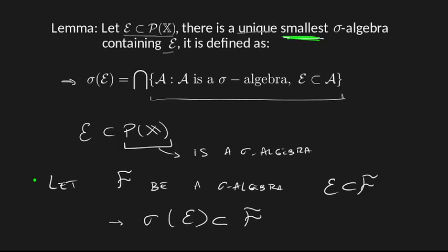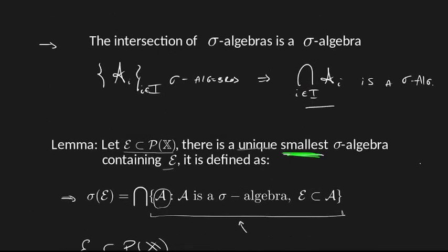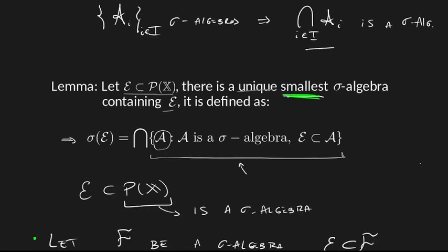And why is it a sigma algebra? Well, these sets we are having here are sigma algebras that contain E. So all of these things that we are intersecting are sigma algebras. And the previous statement said the intersection of sigma algebras is a sigma algebra. So we have many sigma algebras in here that contain E and all we are doing is intersecting them. So this intersection, this generated sigma algebra that we will use this notation sigma of E, is a sigma algebra.